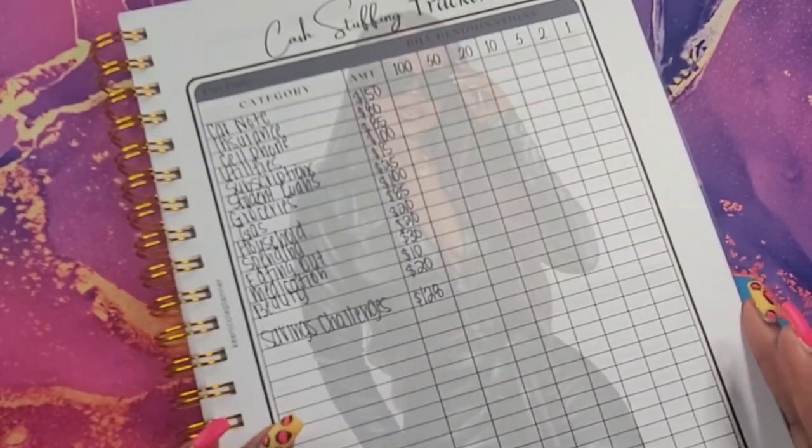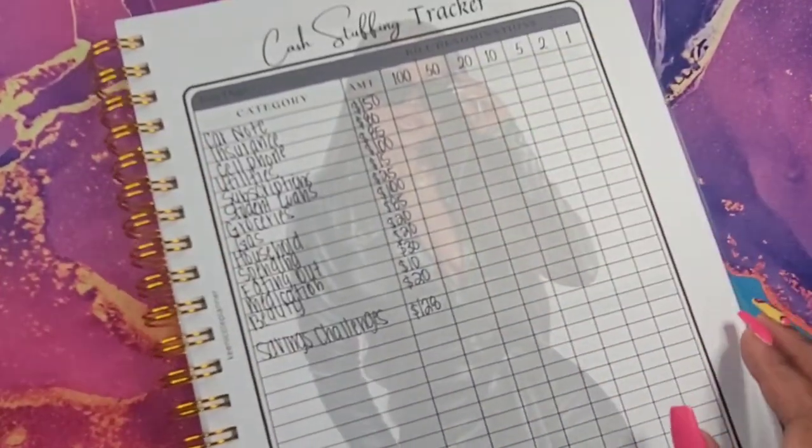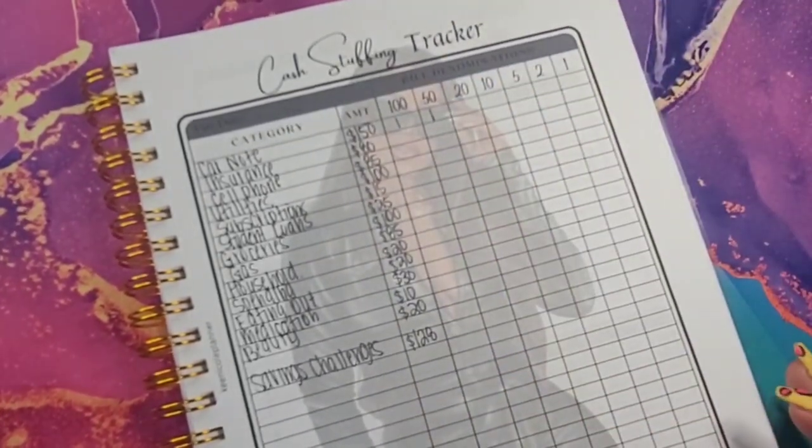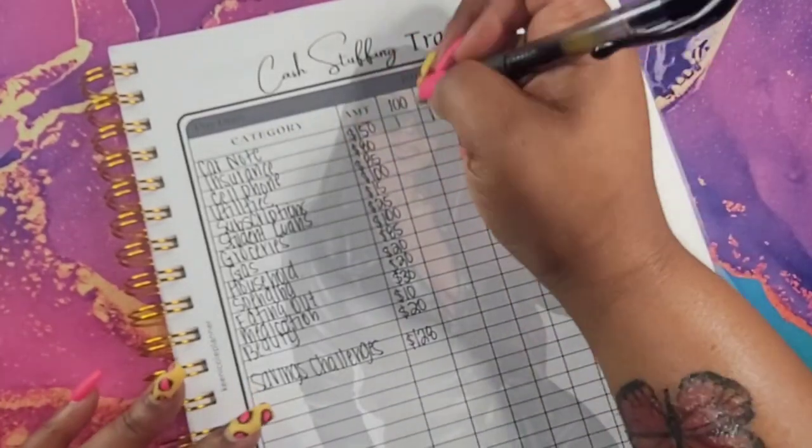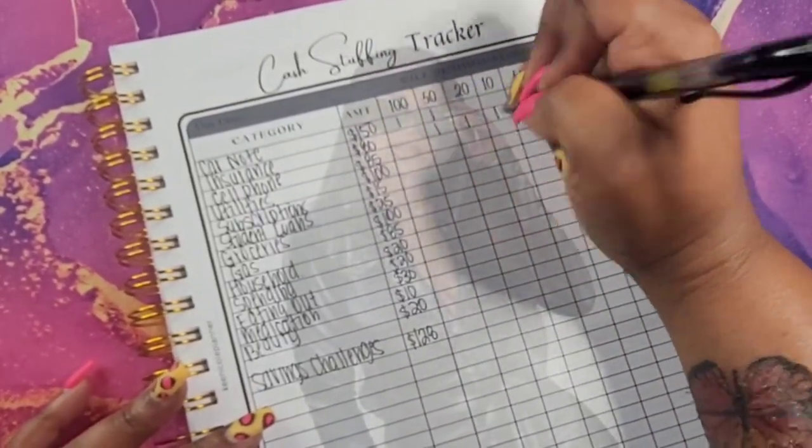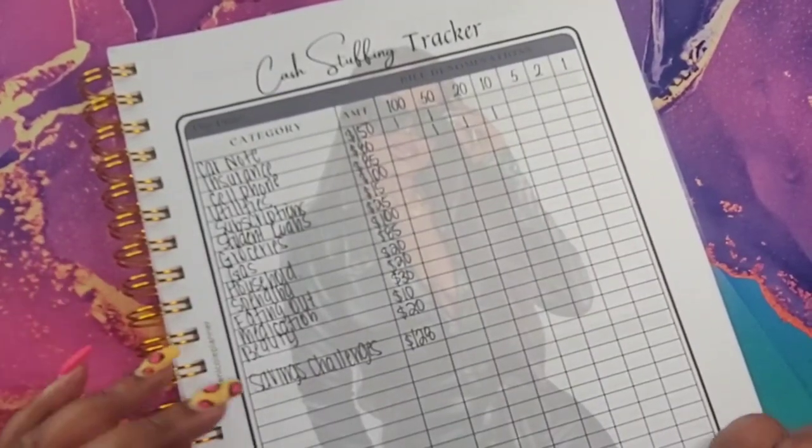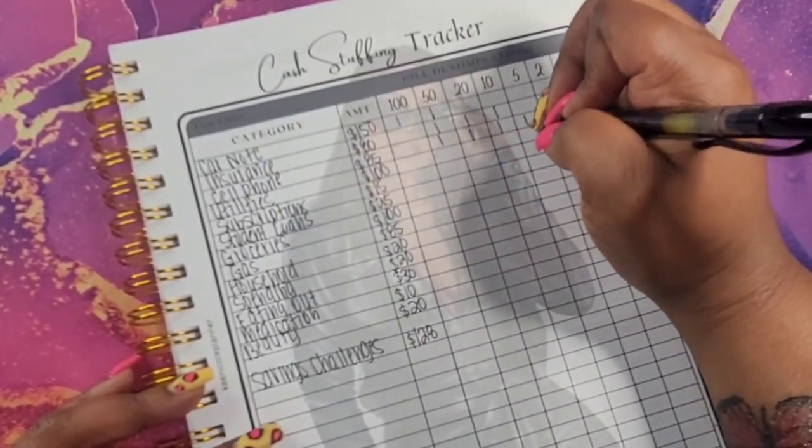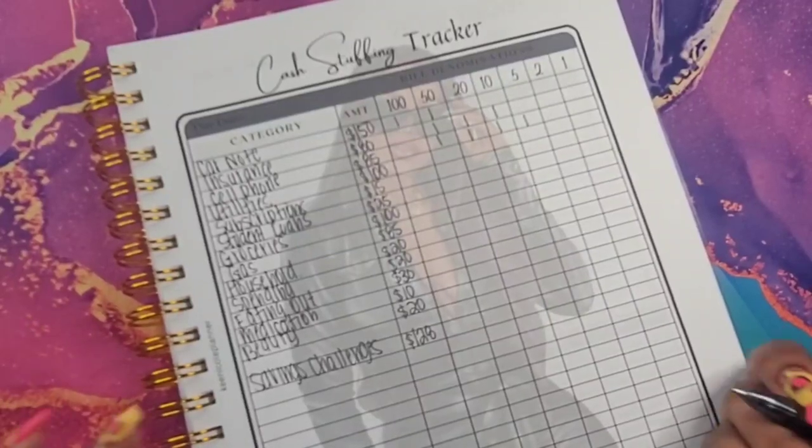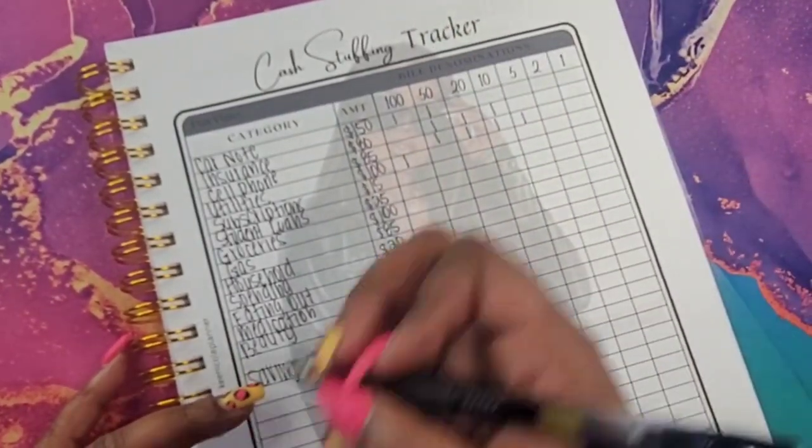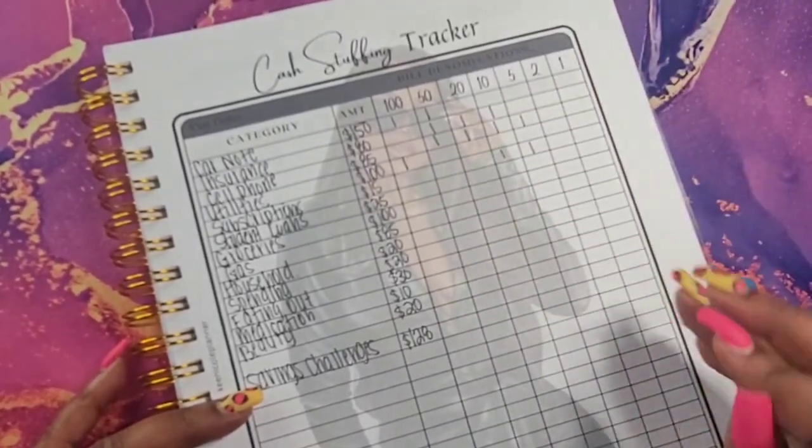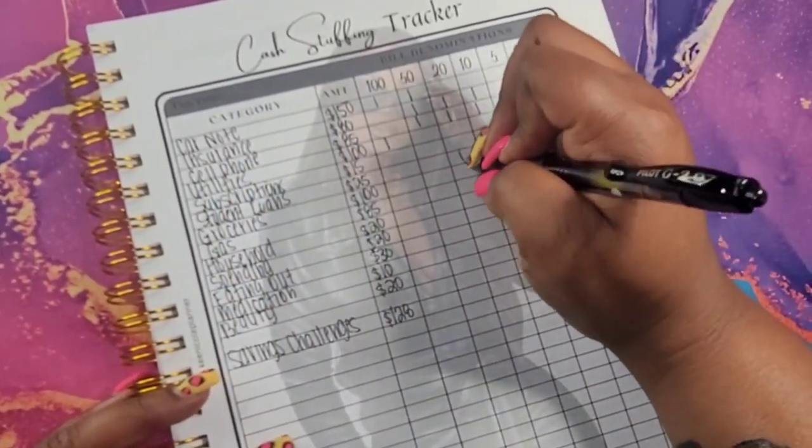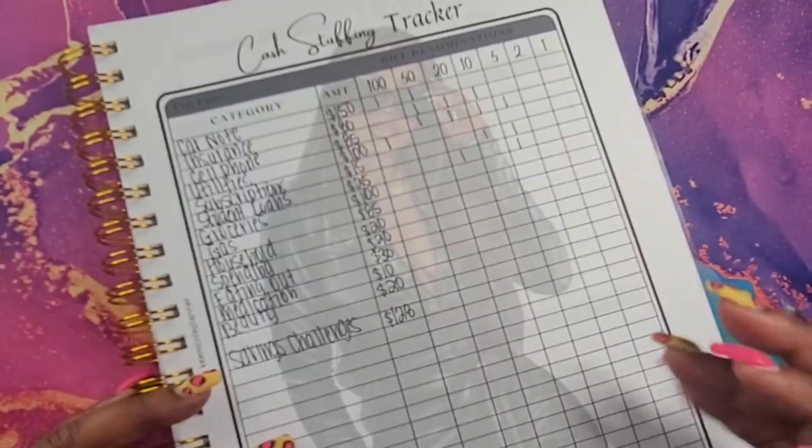So what I will do for my card note, I'm just going to do $100 and $150. For my insurance, I'm going to do a $50, a $20, and a $10 because it's $80. For cell phone, we have $85, so I am going to do $50, $20, $10, and a $5, which equals $85. So for my utilities, I'm going to do $100. For my subscriptions, I'm going to do a $10 and a $5. For student loan, I'm going to do $20 and a $5.